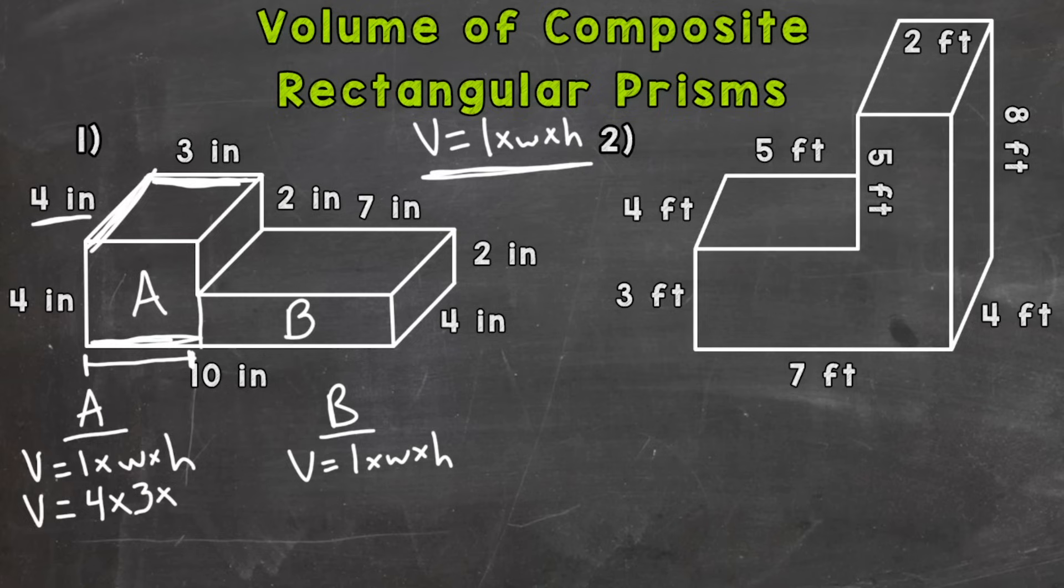And next is the height. And we could look here at this four inches for that. So we need to do four times three times four in order to calculate the volume of part A. Four times three is 12. Times four is 48. And these are cubic inches. Now, we're halfway done with the problem because that is the volume of just A. Now we need to do B.